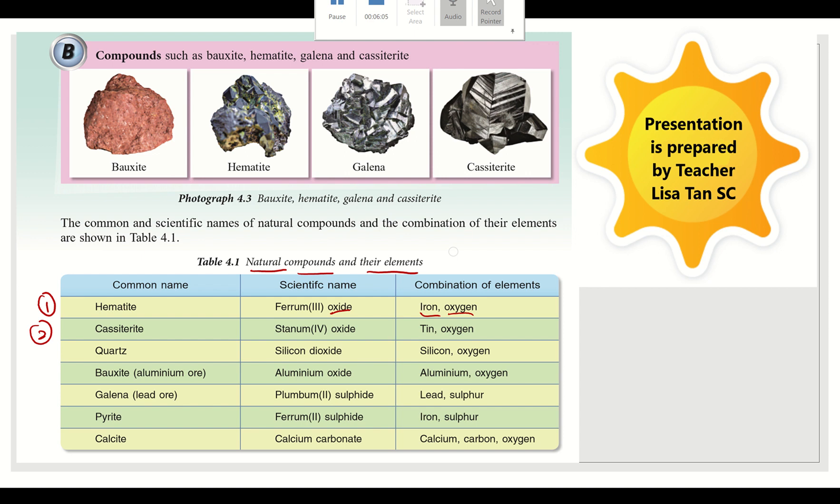Number two, cassiterite. Scientific name, stannum-4-oxide. The elements are tin and oxygen. Quartz. Scientific name, silicon-dioxide. The elements are silicon and oxygen.